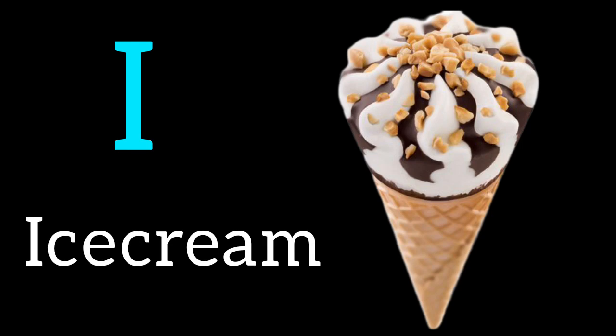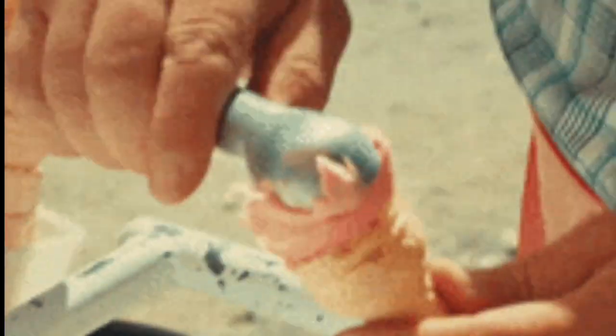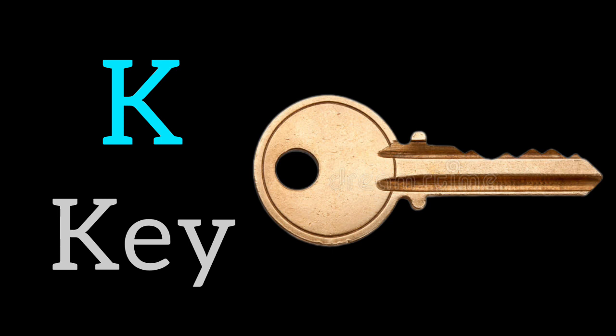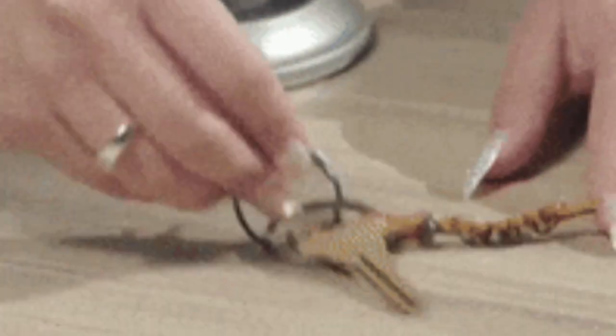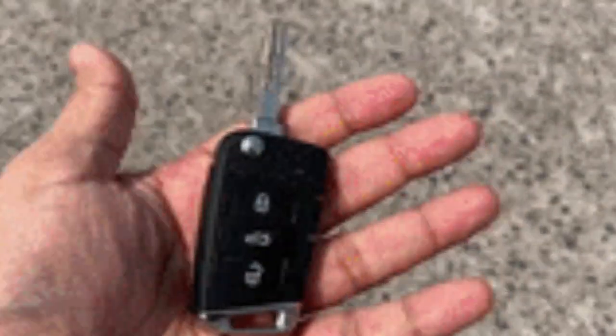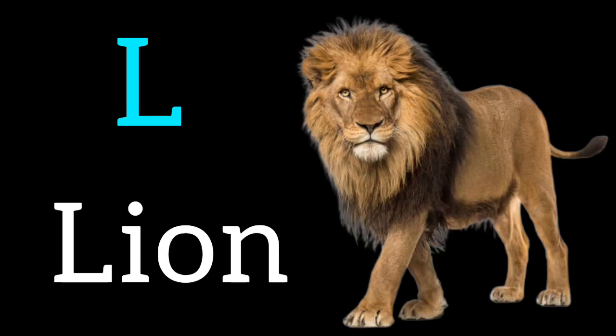I. I for ice cream. J. J for jaguar. K. K for kite. L. L for lion.